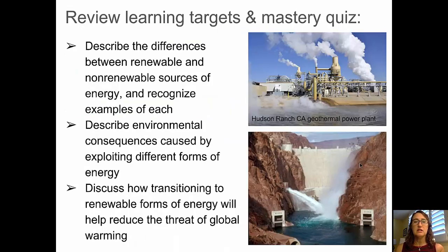We can check on our learning targets: we described the differences between renewable and non-renewable sources of energy, looked at examples of renewable energies, described environmental consequences caused by exploiting different types of energy, and talked about how transitioning to renewable forms of energy will reduce the climate change threat. Go ahead and take your Mastery Check quiz and I'll see you in class.